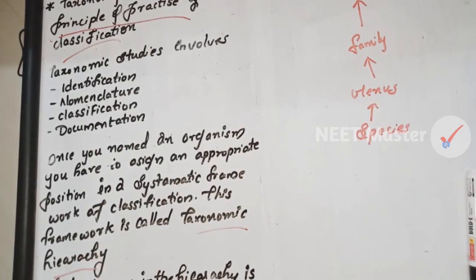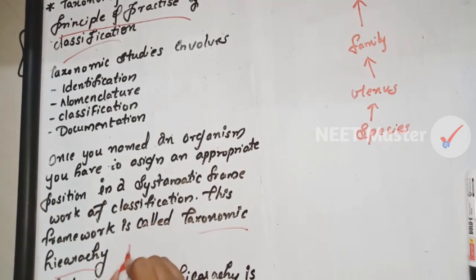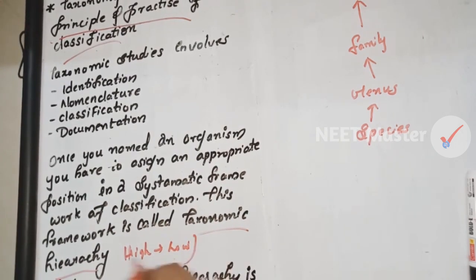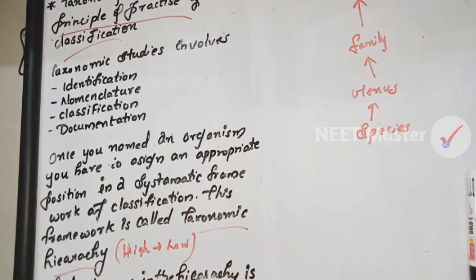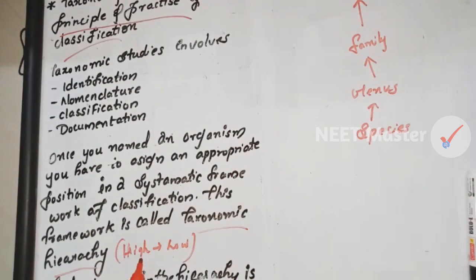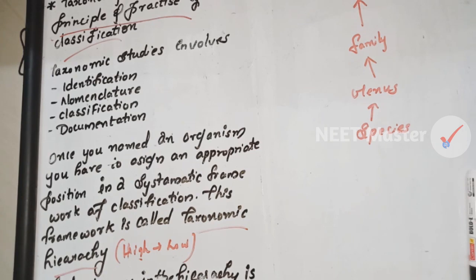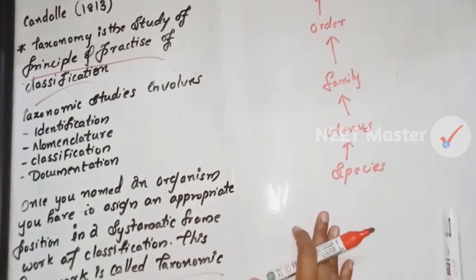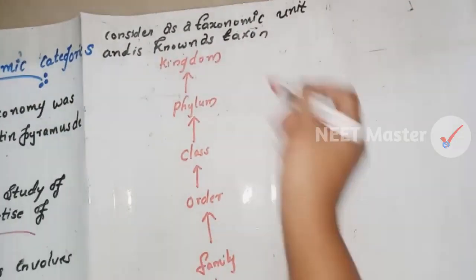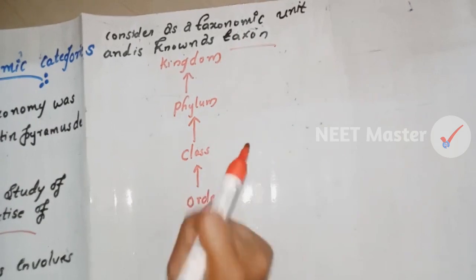The hierarchy goes from high to low position. We position the individual types within a systematic framework called the taxonomic hierarchy. Each level in that hierarchy is called a taxon, which is the name of the taxonomic category.